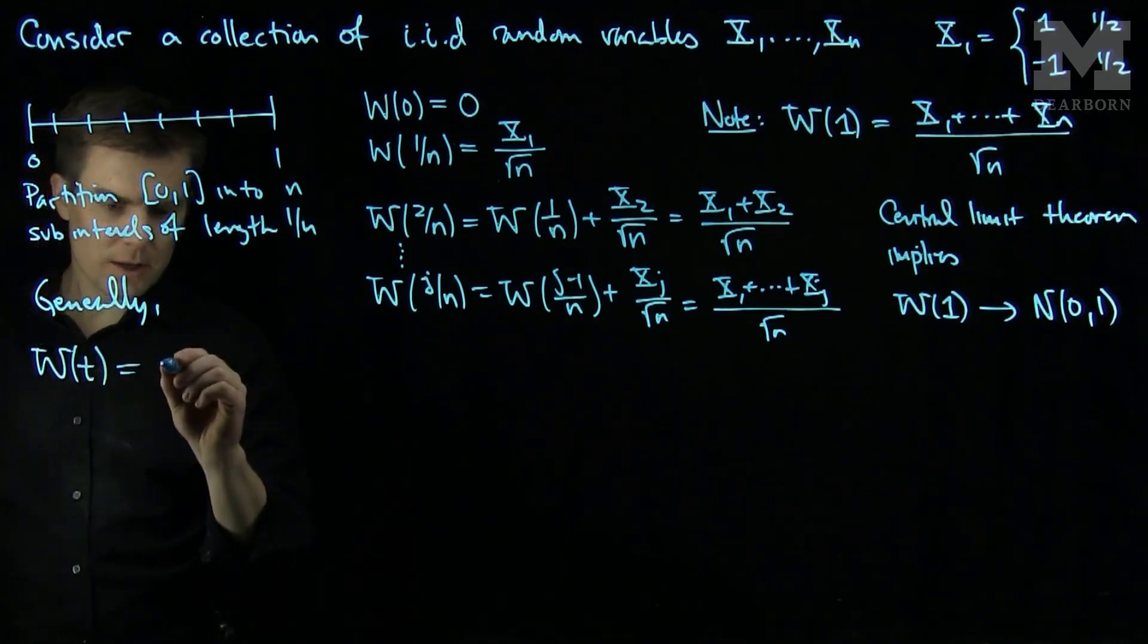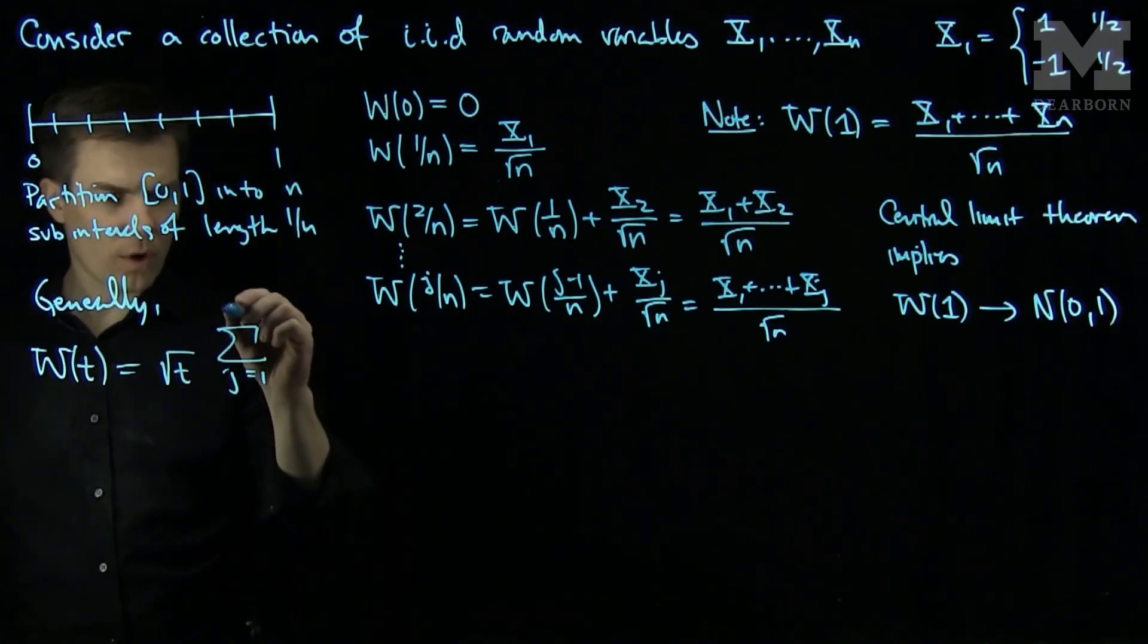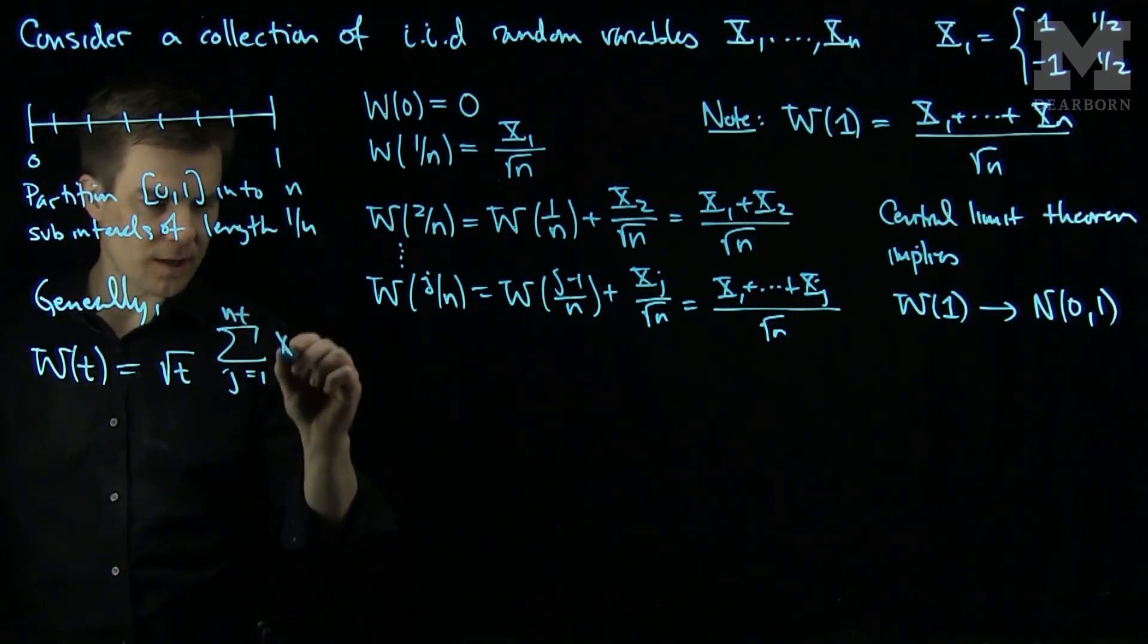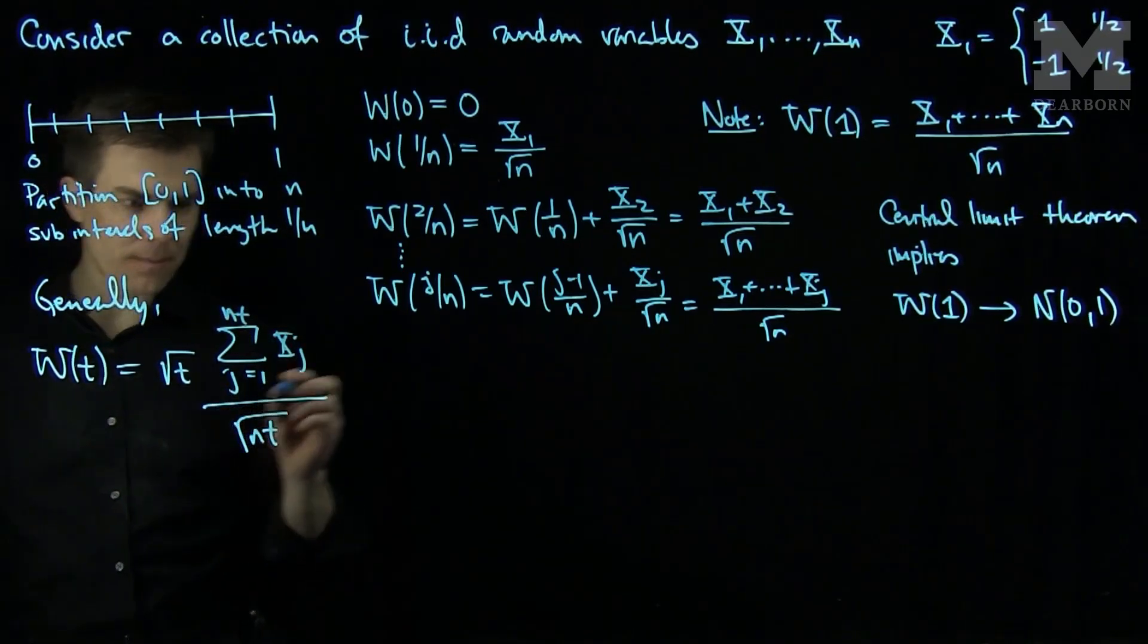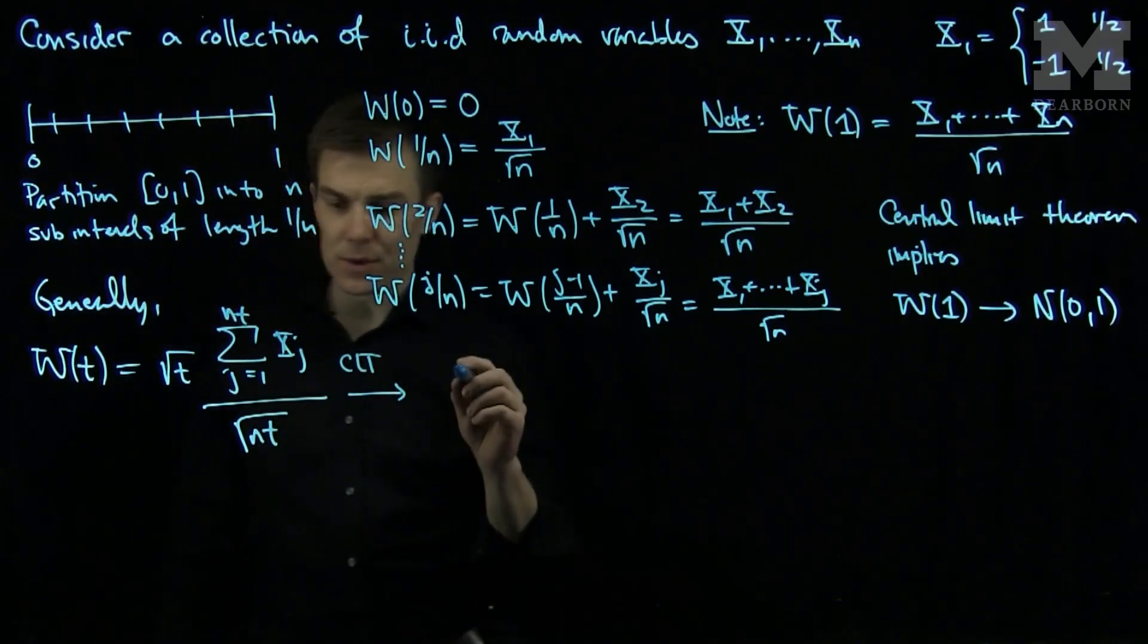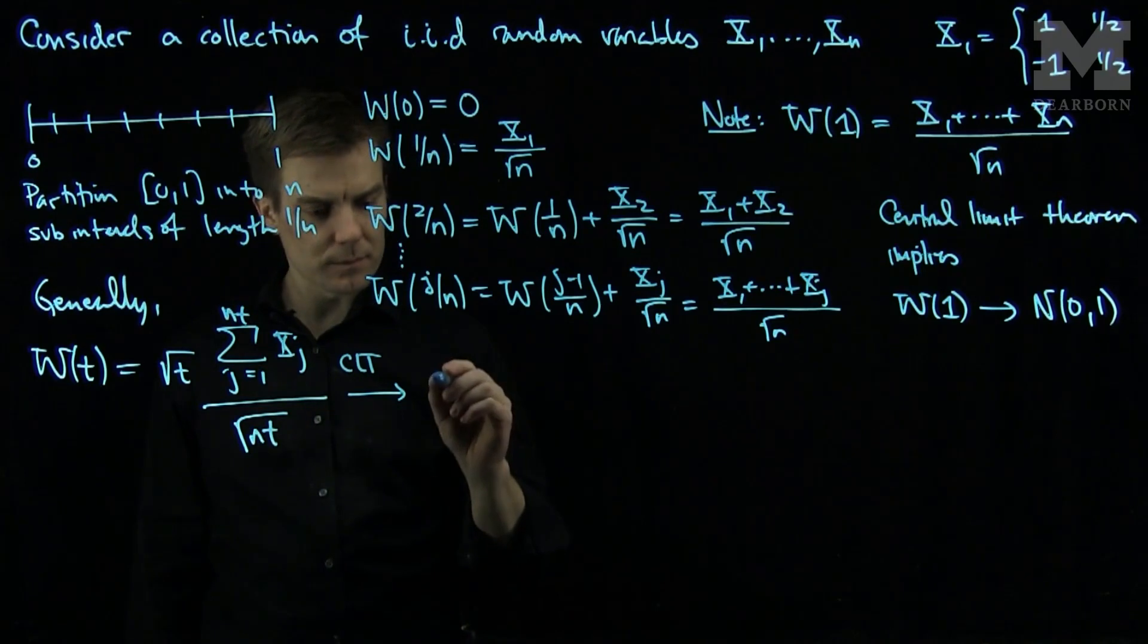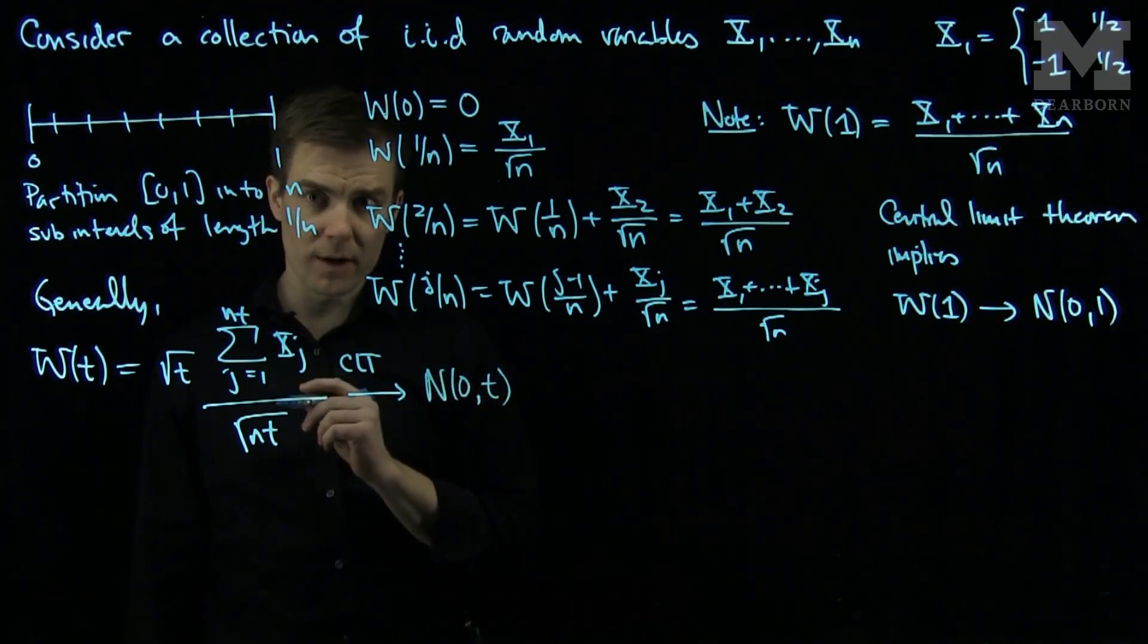wt is the square root of t times the sum j goes from 1 to nt of xj over the square root of nt. The central limit theorem implies that this will converge to a normal random variable with mean 0 and variance t.